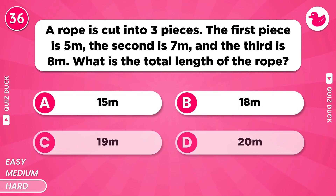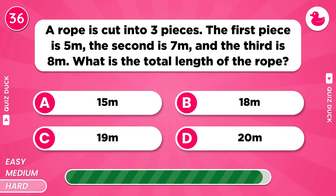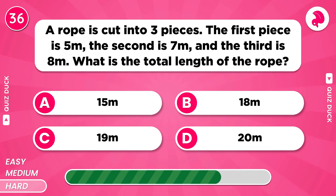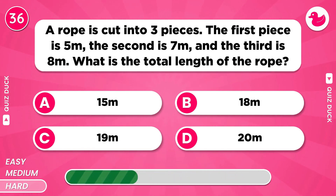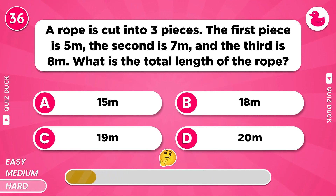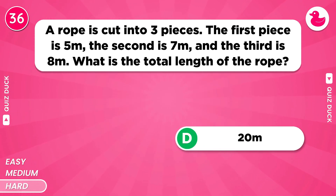A rope is cut into 3 pieces. The first piece is 5 meters, the second is 7 meters, and the third is 8 meters. What is the total length of the rope? 20 meters.